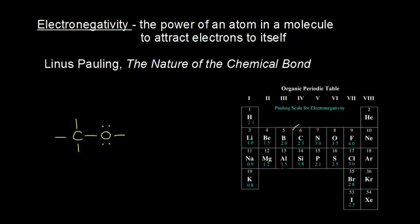For example, we are concerned with carbon, which has an electronegativity value of 2.5, and we're going to compare that to oxygen, which has an electronegativity value of 3.5. So oxygen is more electronegative than carbon. The definition tells us that if oxygen is more electronegative, oxygen has a greater power to attract electrons to itself than carbon does.